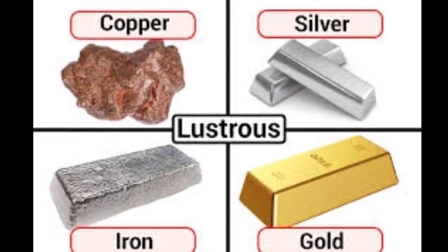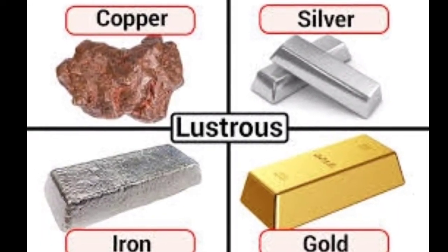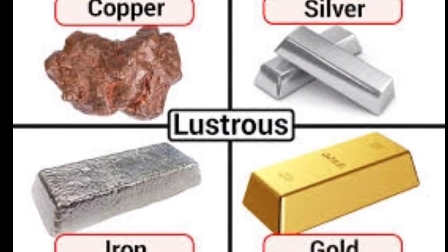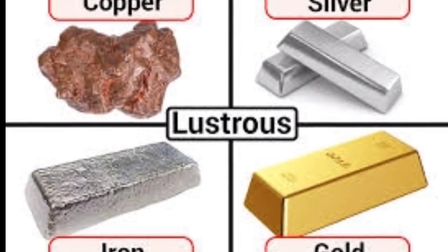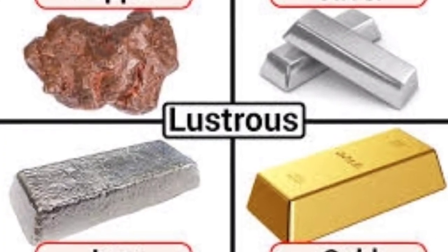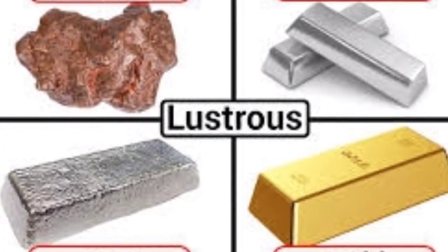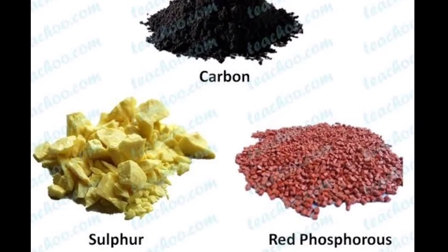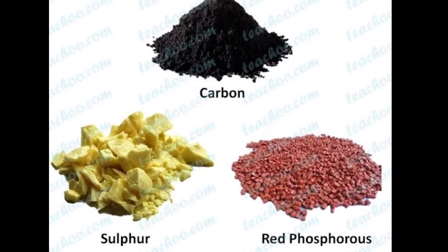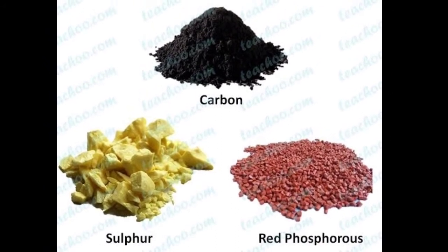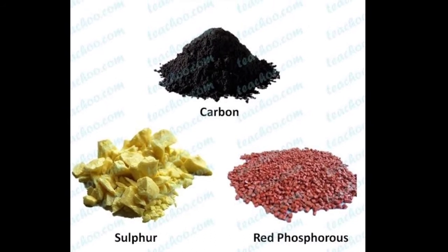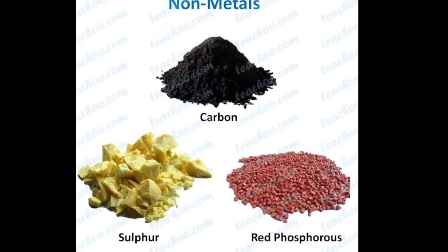Metals have luster. See the examples: copper, silver, iron, and gold — all have some shine. Having shine means having luster, that's why they are called lustrous. Non-metals do not have luster. Carbon, sulfur, and red phosphorus are some examples, but they do not have shine, so they are non-lustrous.